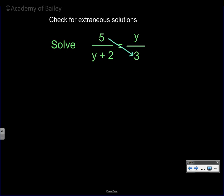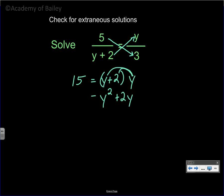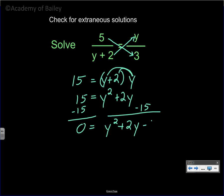Cross multiply: 5 times 3 will give you 15, and that's going to be equal to (y + 2) multiplied by y. Now let's go ahead and distribute here. y times y is y squared, y times 2 is positive 2y. Let's go ahead and subtract 15 from both sides — there is nothing to subtract 15 from on the right side because there are no like terms over there. So this is what we have left.